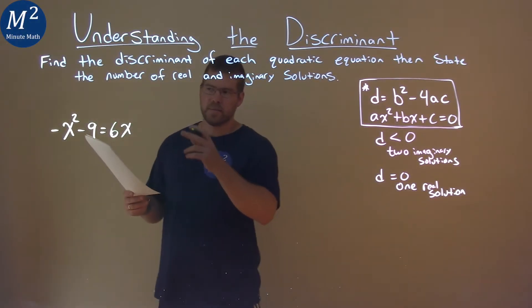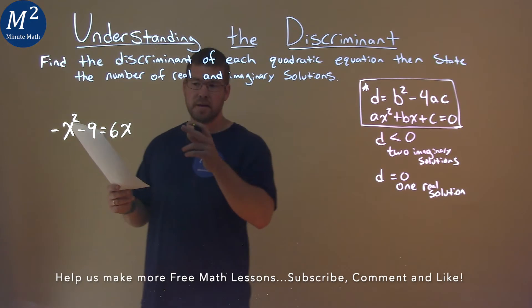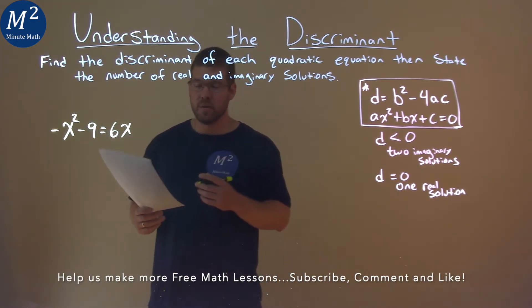We're given this problem right here: negative x squared minus 9 equals 6x, and we need to find the discriminant.